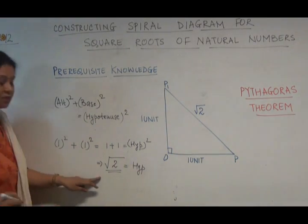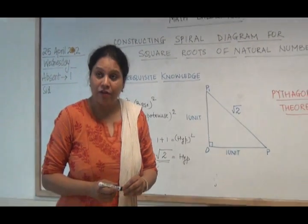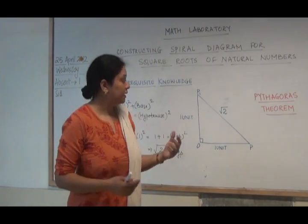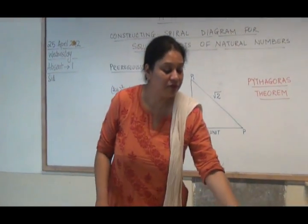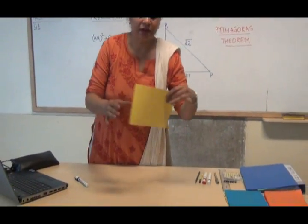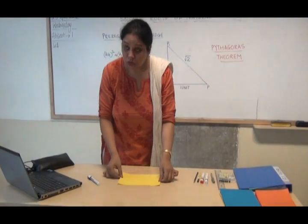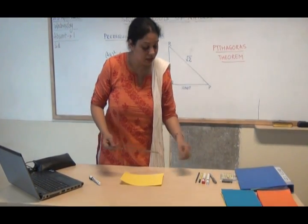With this knowledge, we are going to do a paper folding activity today and we will find out square roots of various natural numbers with the method of paper folding activity. Here I have cutouts for all of you. These are rectangular in shape. We take this, we place it on our desks. We have a scale for us and a pencil.